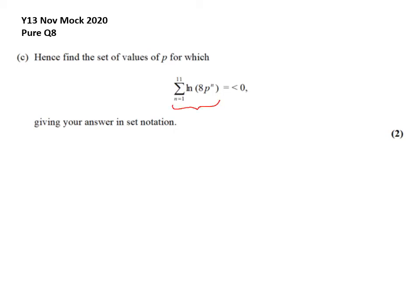So in part B, we were given that this is the same as 33 ln of 2p squared. So if we just start from the premise that we're looking at 33 ln of 2p squared being less than 0, I want the set of values of that.